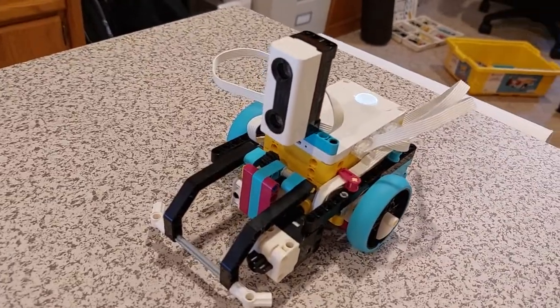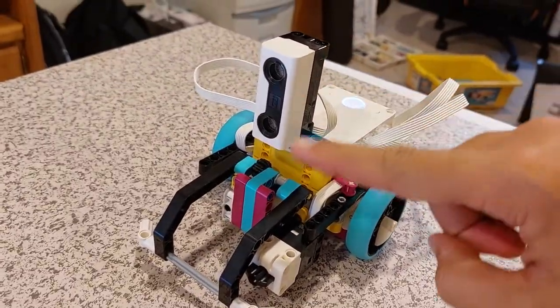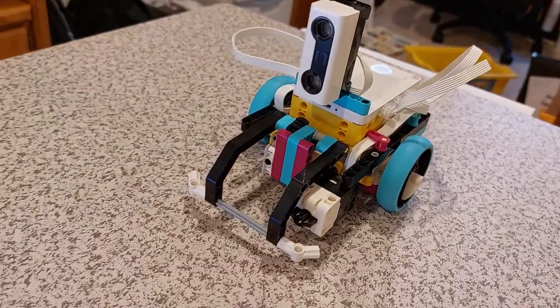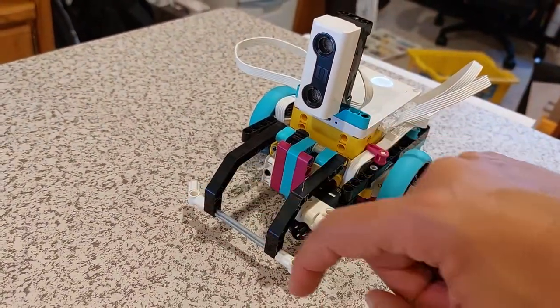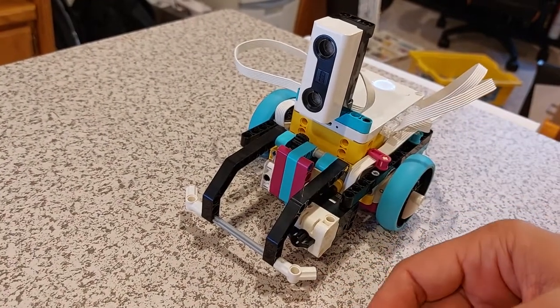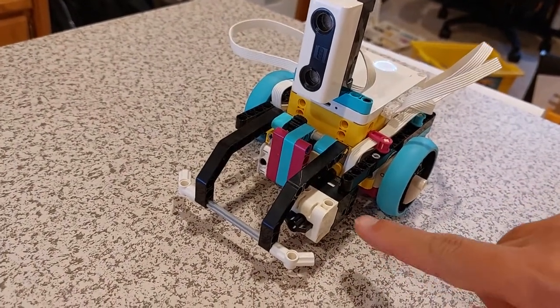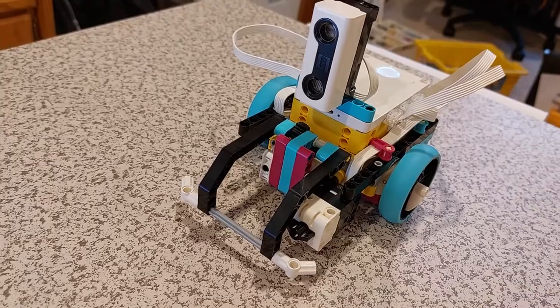So it has the ultrasonic sensor up here that's going to be used for detecting distance, and it's got this robotic arm here to be able to go up and down to grab onto things. It's also got this force sensor, but we're actually not going to be using that here.